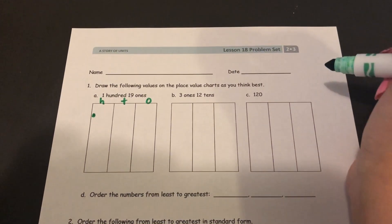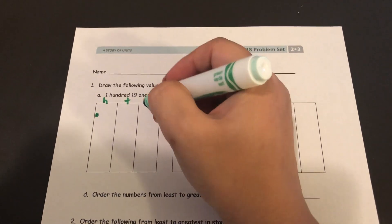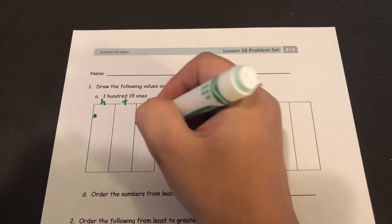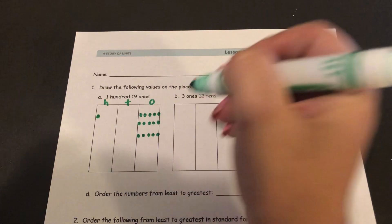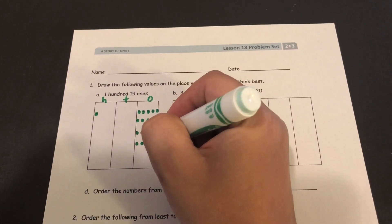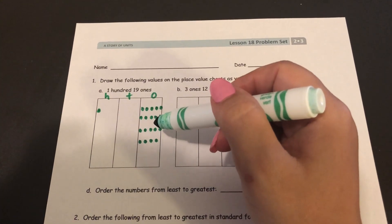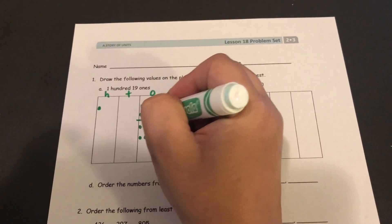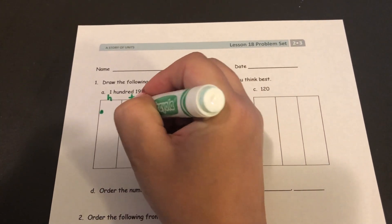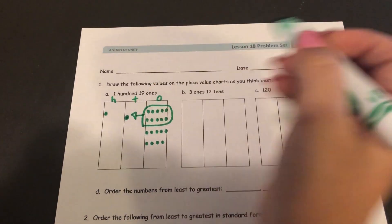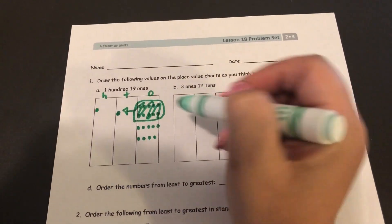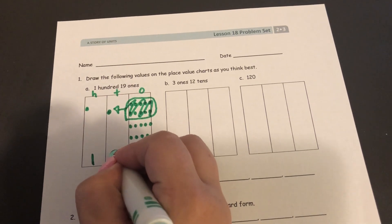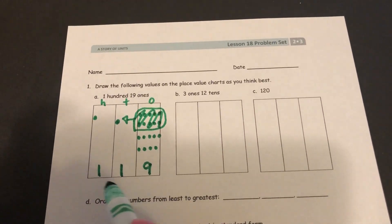1 in the hundreds place and then 19 in the ones place. 1, 2, 3, 4, 5, 6, 7, 8, 9, 10, 11, 12, 13, 14, 15, 16, 17, 18, 19. And I can tell that I've got more than 9 ones. I've got 19. So I'm going to circle a group of 10 ones and I'm going to turn it into a 10. So I no longer have 10 ones in this place, I have 1 10. So this number has 100, 1 10, and 9 ones. It's the number 119.